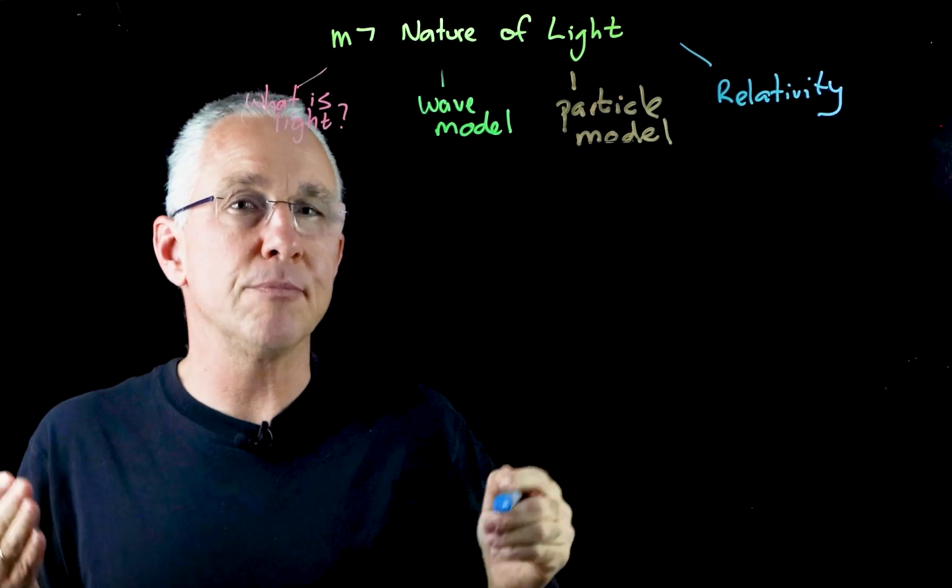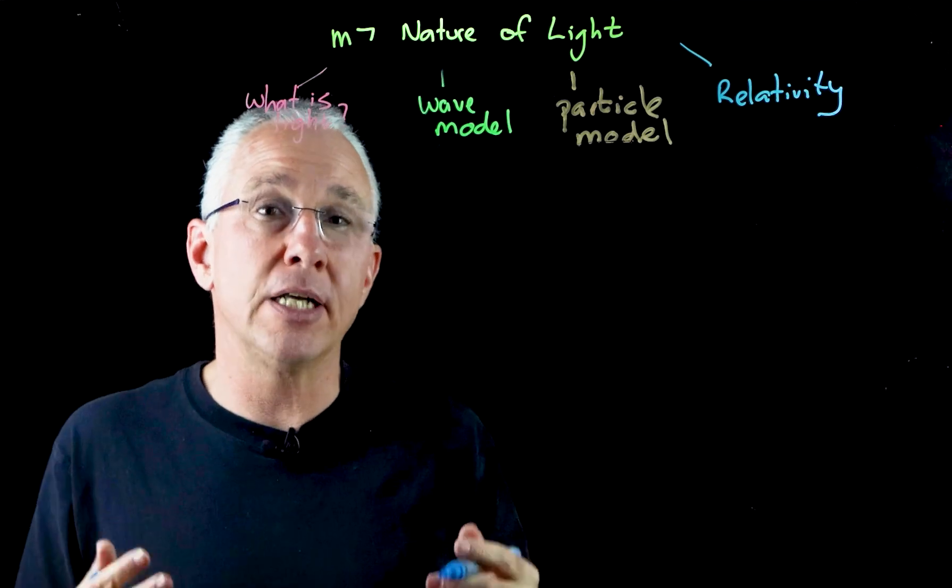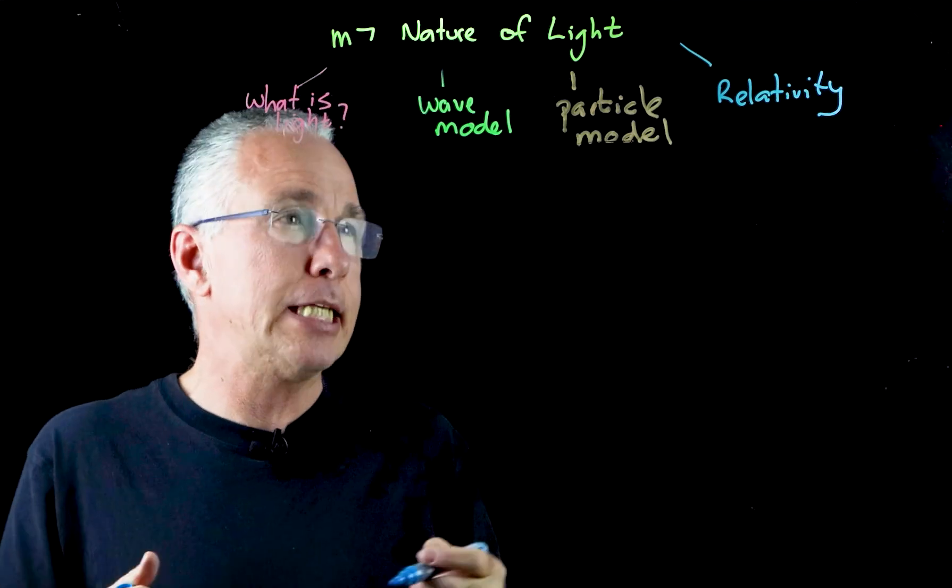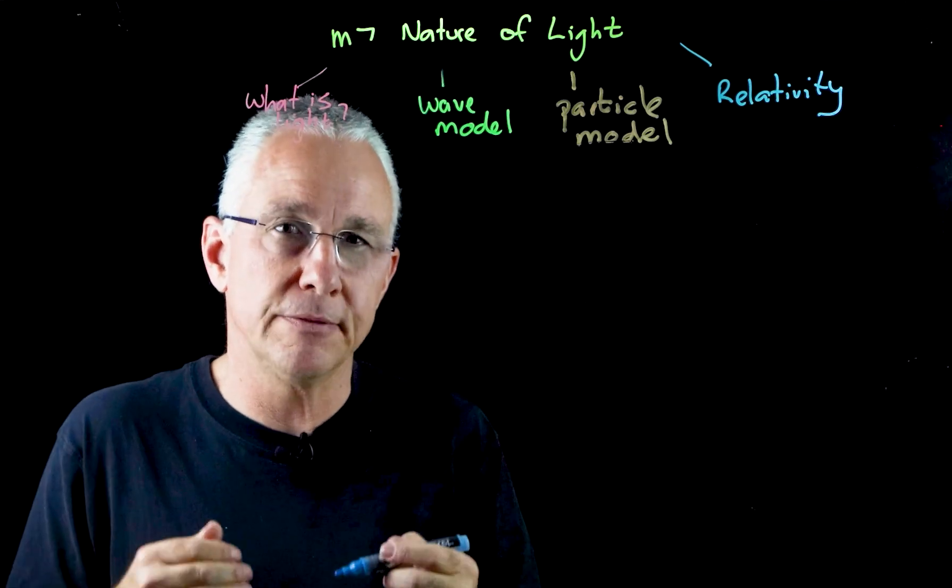And now finally we come to the concept of relativity. In other words we're answering the question how does the behavior of light affect time, space and matter. And so here we're dealing with really Einstein's special theory of relativity.